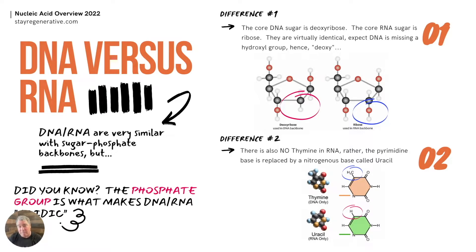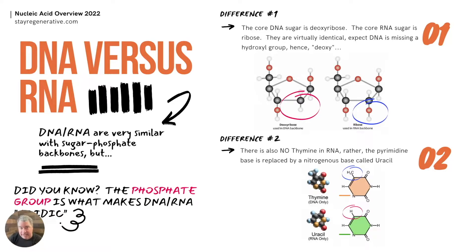The first difference is between ribose and deoxyribose. At the two-prime location, ribose has a hydroxyl group — an oxygen and a hydrogen — whereas deoxyribose, as the name implies, does not. It lacks that hydroxyl group at the two-prime location, which is how it gets the name 'deoxy.' They are otherwise very similar. The second difference is more substantial: RNA does not have the pyrimidine thymine; rather it has the pyrimidine called uracil.